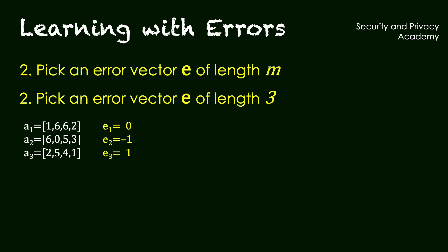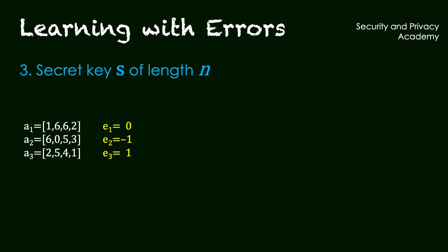The final ingredient is the secret key s of length n, so the same length as our vectors, which is 4, which we also randomly choose, using these values. Note that all are modulo 7.